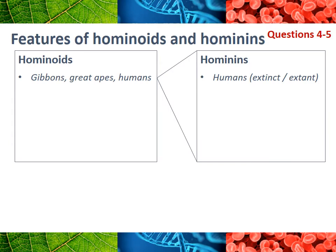So we've looked at the features of primates - things like forward-facing eyes, a relatively large brain, and rotating shoulders and hips. Now there are features specific to hominoids and then to hominins. Obviously all the primate features still apply - they're still primates - but there are a few new characteristics. Hominoids, remember, includes gibbons and great apes.